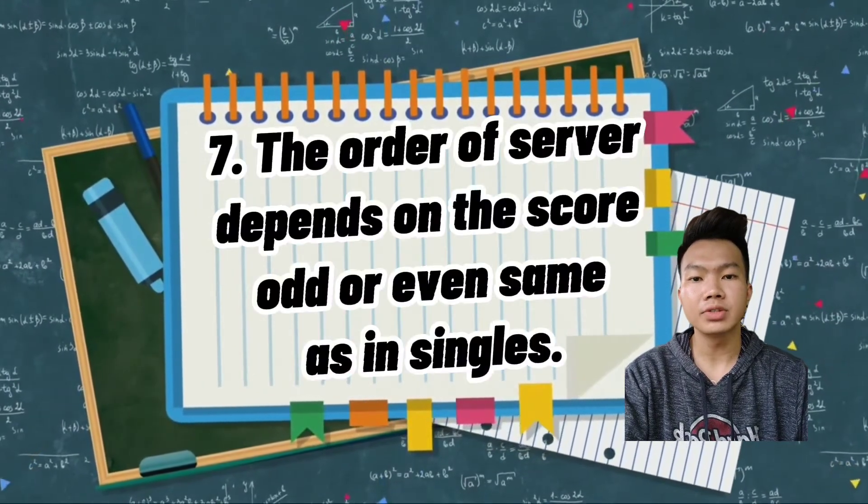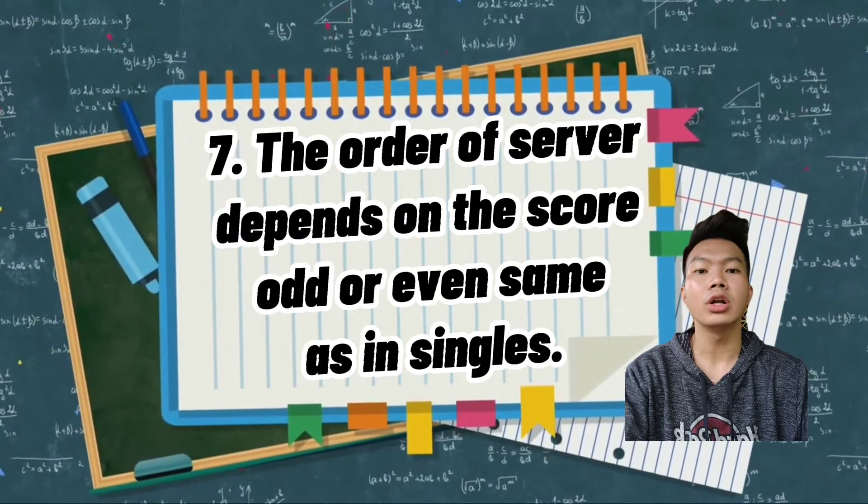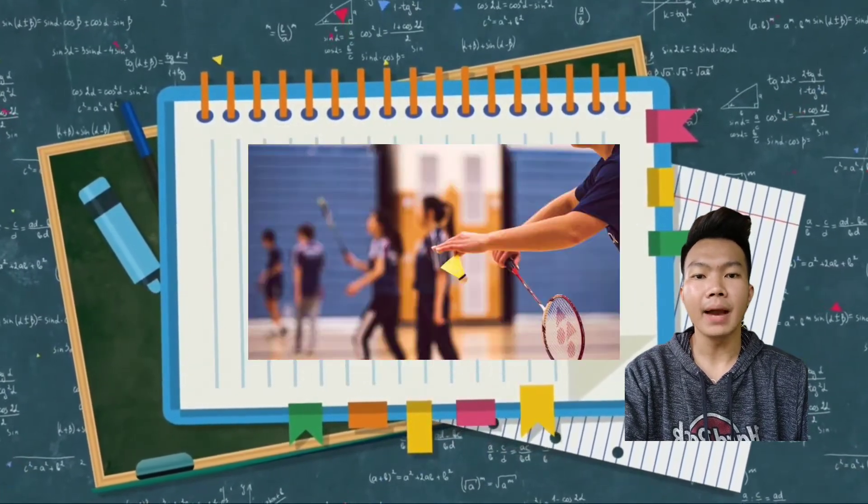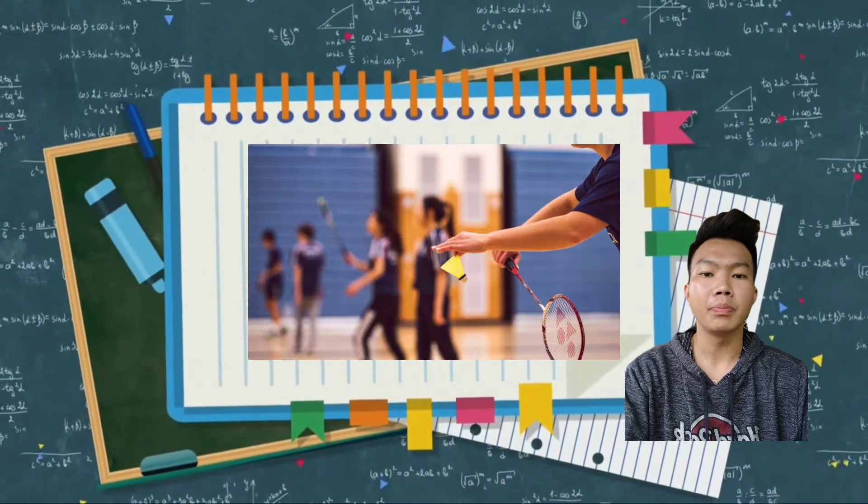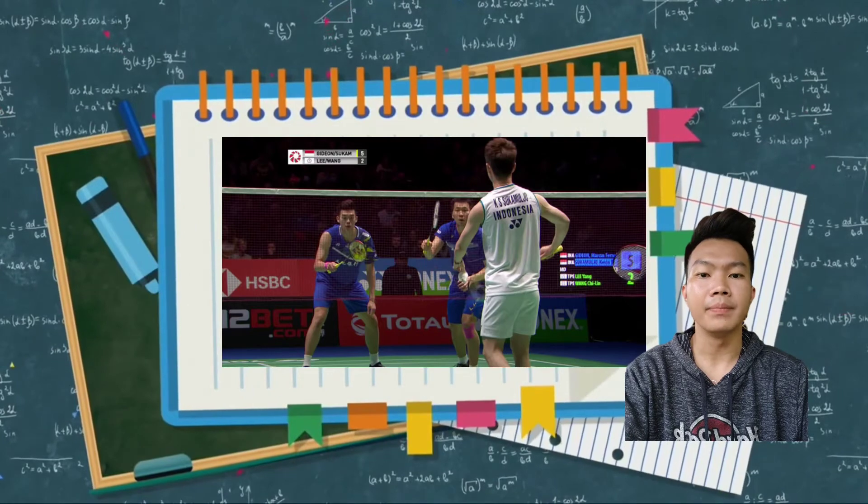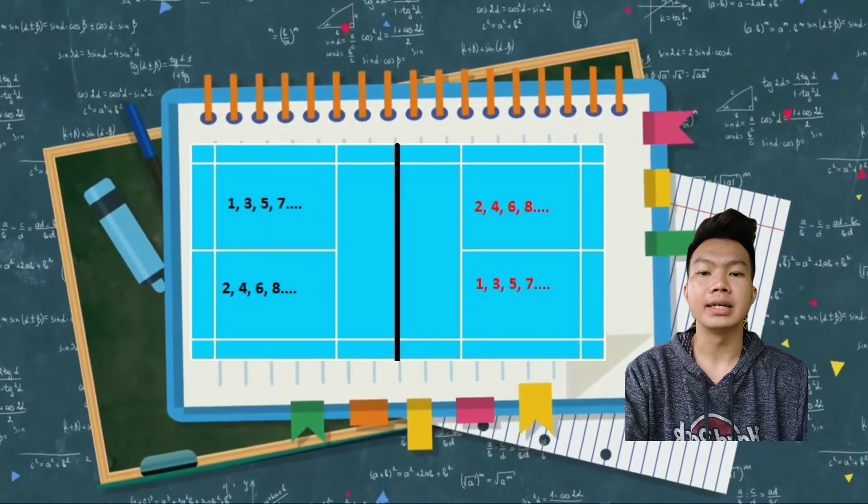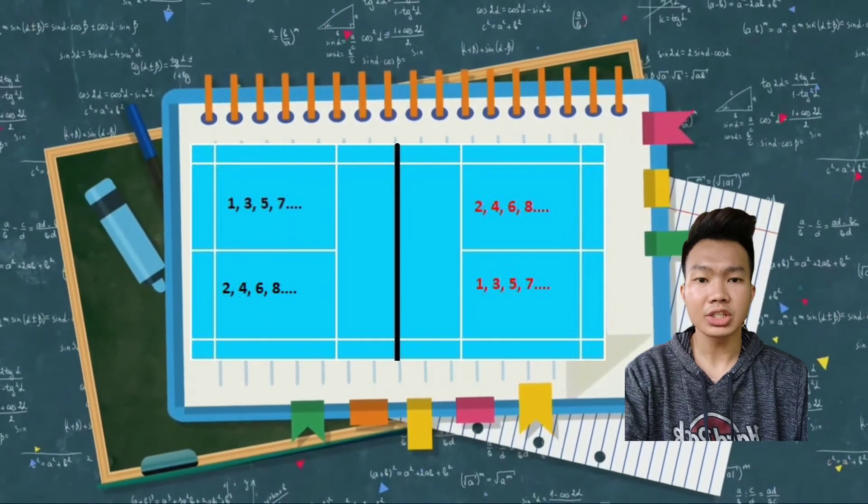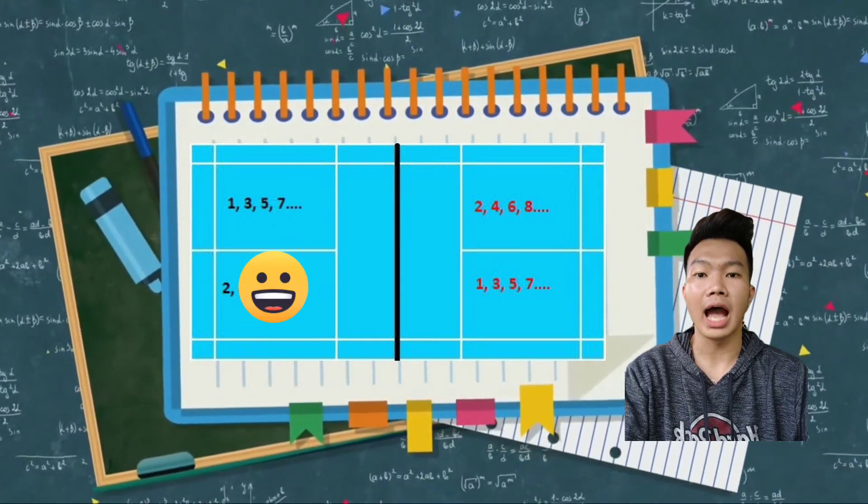Number seven, the order of server depends on the score, odd or even, same as in singles. Nakadepende ang pag-serve ng isang player or pair sa score. Halimbawa, kung ang score ay one all, ang service ay sa left magsisimula, at kapag two all naman, ang score ay sa right side ng court ang service.